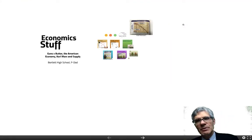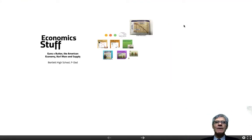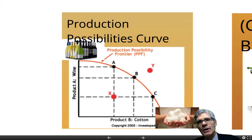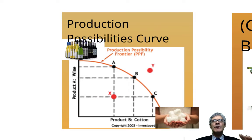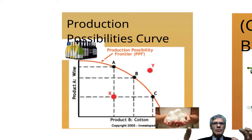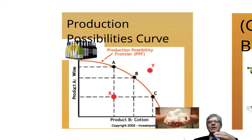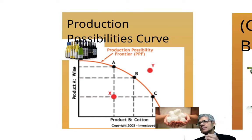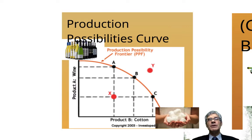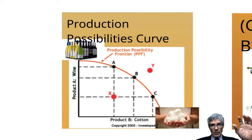We're going to be looking at guns and butter, the American economy, Karl Marx, and the law of supply. The production possibilities curve is when you've got two things you can make. Let's say you've got a factory where you make wine and cotton. When you put all your resources, all your best people and equipment, on just making wine, there's a maximum amount you can make and you make no cotton. Or you produce only cotton and no wine. The production possibilities curve covers all the choices in between.